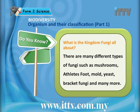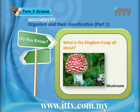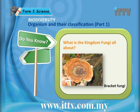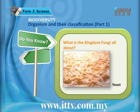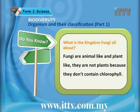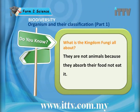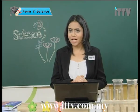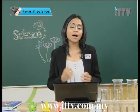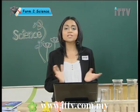The kingdom Fungi includes mushrooms, athlete's foot, mold, yeast, bracket fungi and many more. Bracket fungi grow on trees and are disc-like in shape. Fungi are both animal-like and plant-like: they are not plants because they don't contain chlorophyll, and they are not animals because they absorb their food rather than eat it. Remember their characteristics and examples in the kingdom of Fungi.